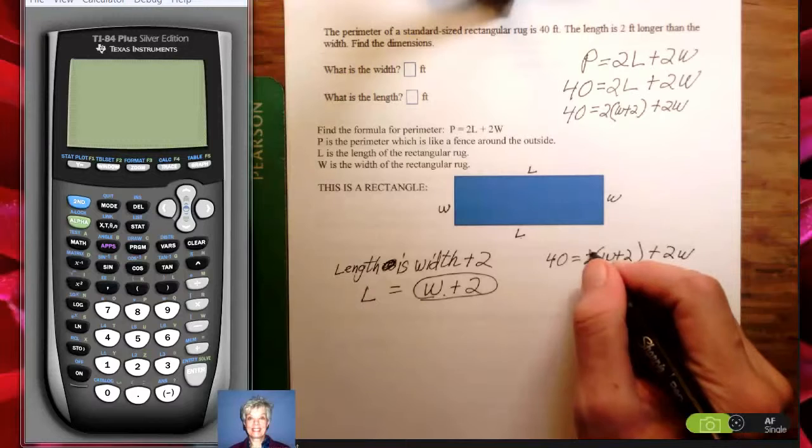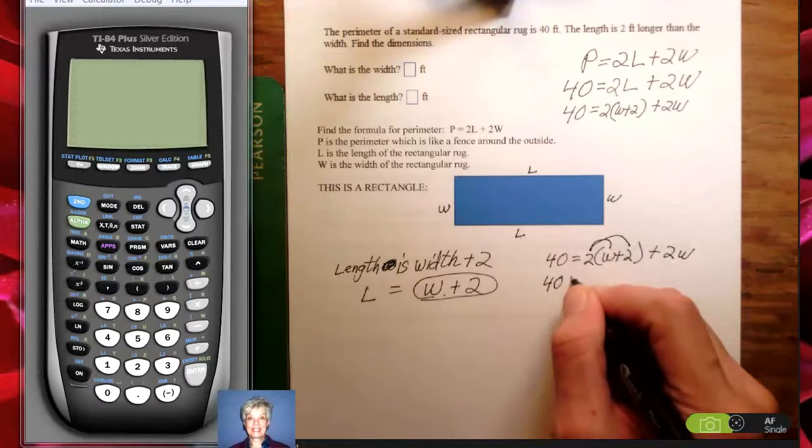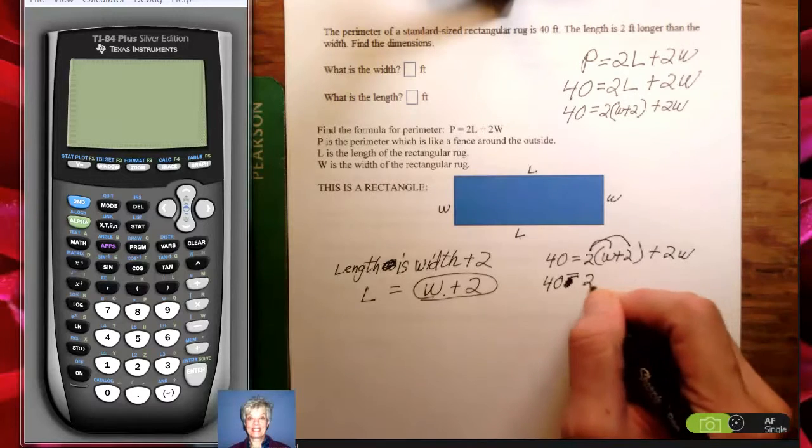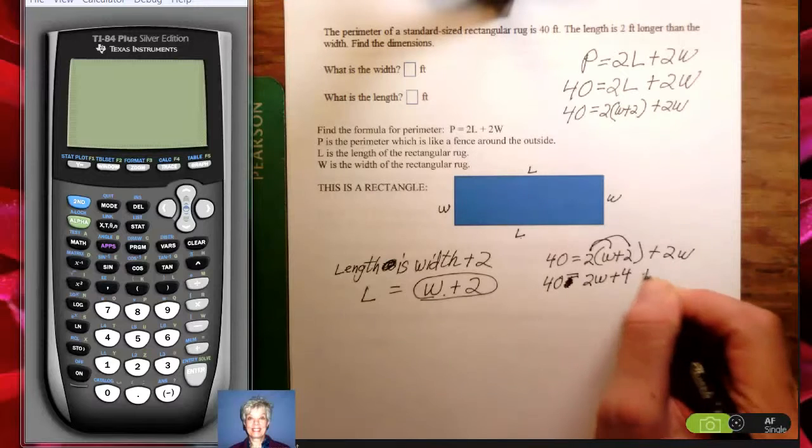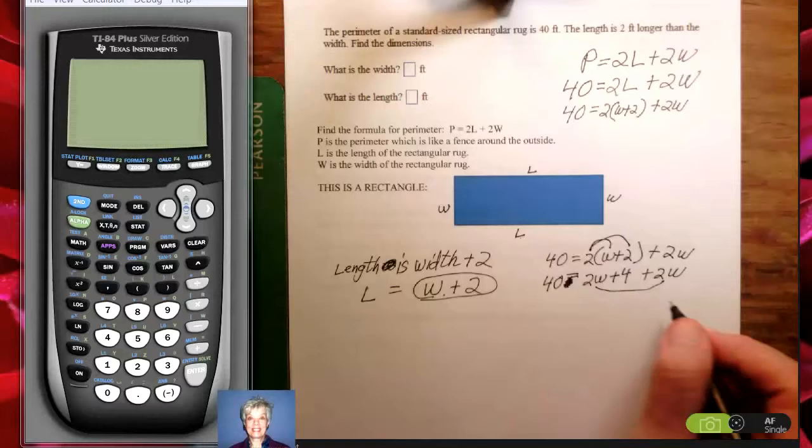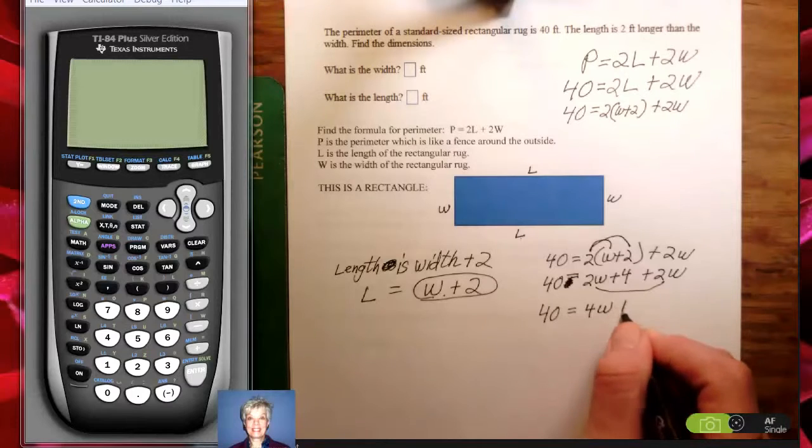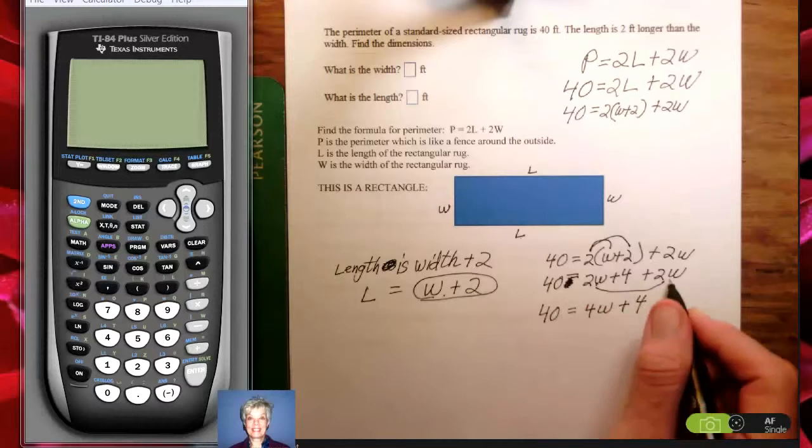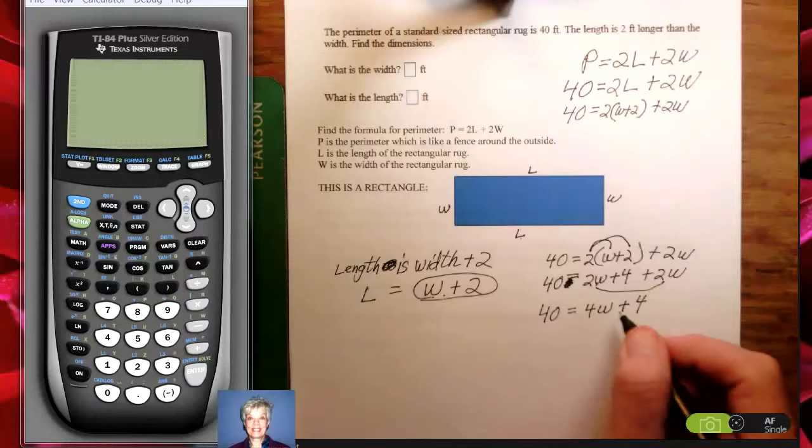I'm going to have 40 equals 2 times W plus 2 plus 2W. I need to distribute here so I'll have 40 equals 2W plus 4 plus 2W. Now I'm going to add my like terms together. 40 equals 4W plus 4 because you've got two W's, you add another two W's, you now have four W's. Alright, so here's my equation.